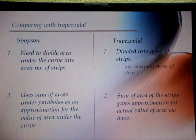Comparing with trapezoidal rule, Simpson's rule need to divide the area under the graph into even number of strips, and it uses the sum of areas under parabolas as an approximation for the value of area under the curve. As for trapezoidal, it divides into n number of strips and there is no constraint on the number of strips. The sum of area of the strips gives the approximation for the actual value of area we have.